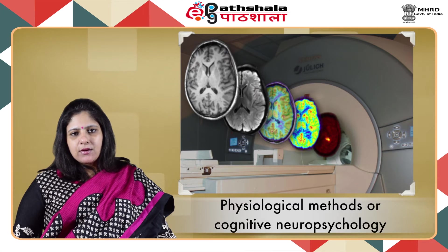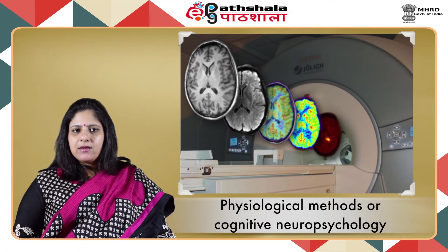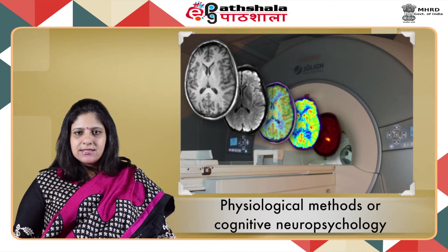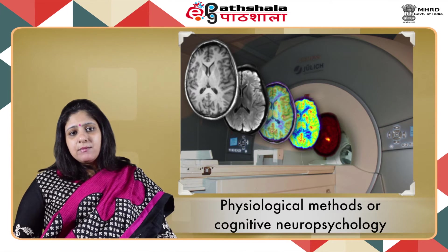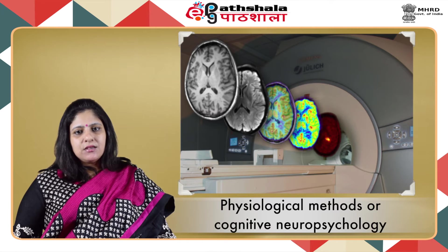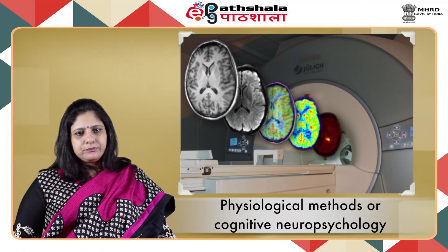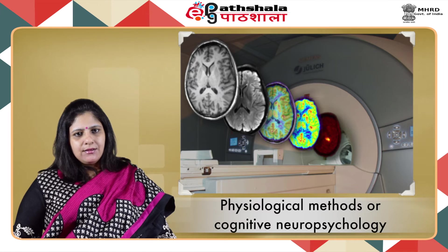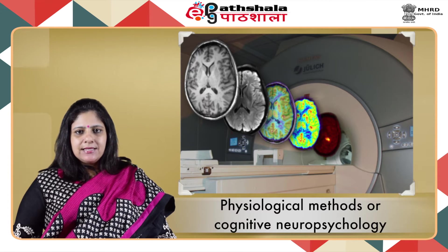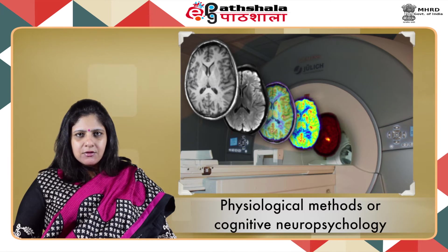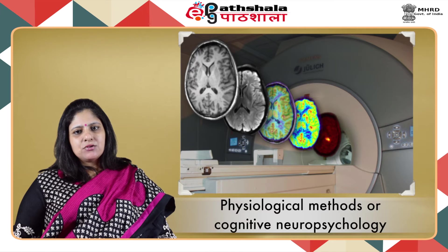The next method is physiological methods or cognitive neuropsychology. Besides measuring behaviour, physiological measures are also very important — bodily systems such as brain activity, eye movements, blood pressure and heart rate are important indicators used in experiments to understand cognitive processes. Some relevant methods are EEG, neuroimaging and brain lesions. EEG is a multichannel recording of the continuous electrical activity of the brain, measured with a multichannel recorder that detects voltage changes generated by large numbers of neurons below electrodes placed on the scalp.